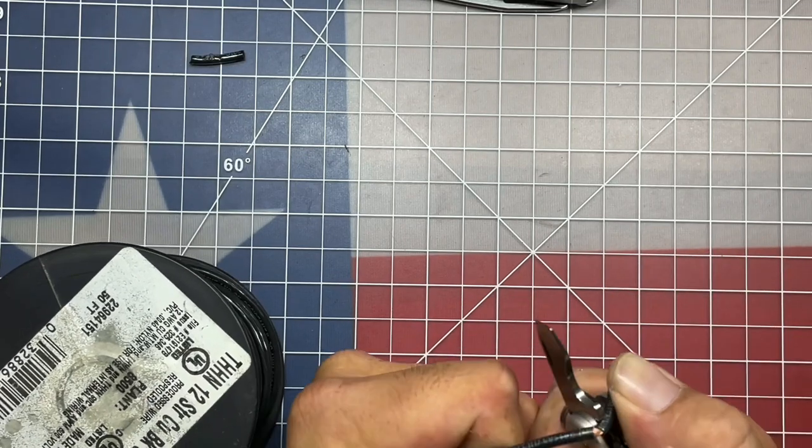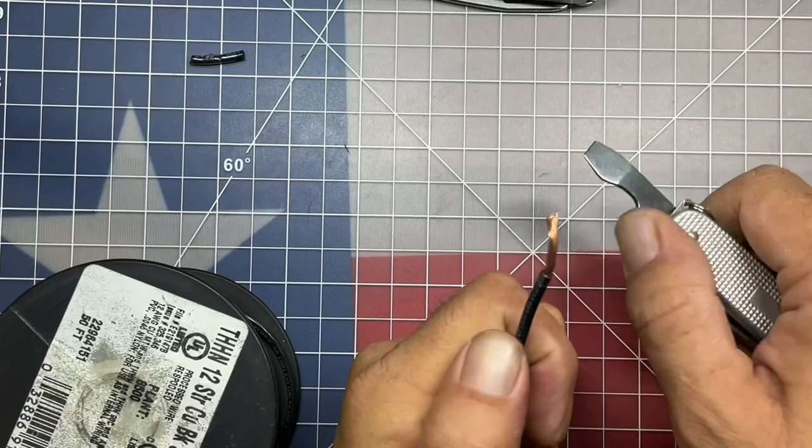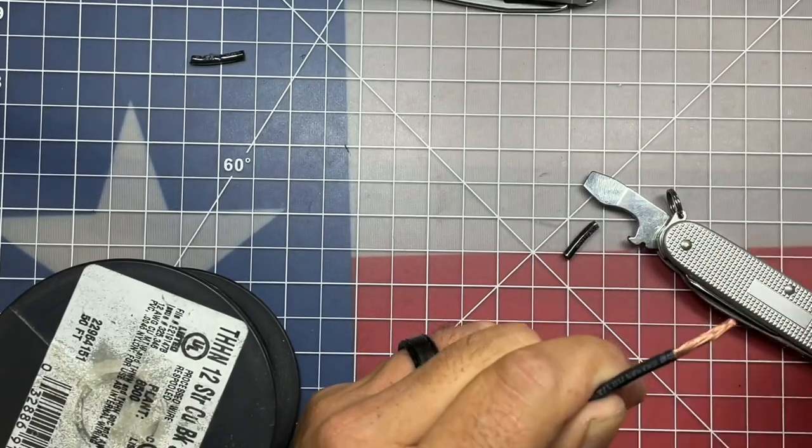Just set the stripper so that it's on the insulation. Then you can kind of bend the wire over, and then use the stripper to pull the wire out, and that creates your strip.